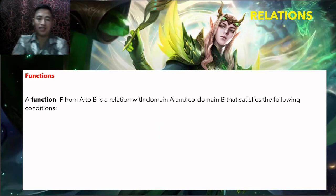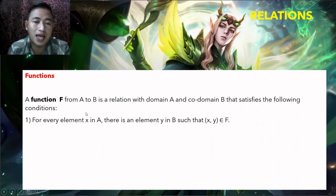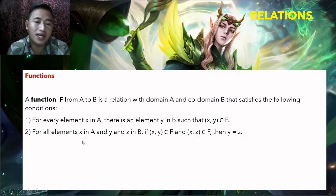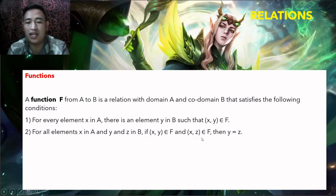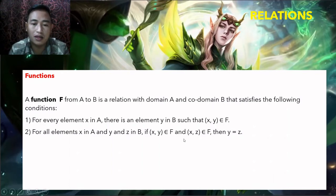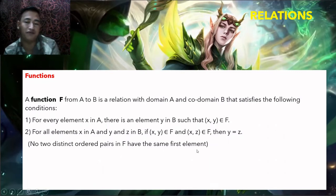Functions: A function F from A to B is a relation with domain A and codomain B satisfying two conditions. Condition 1: for every element x in A, there is an element y in B such that (x, y) is in F — every element of A must be paired with some element in B. Condition 2: for all x in A and y, z in B, if (x, y) and (x, z) are both in F then y equals z — no two distinct ordered pairs in F have the same first element.